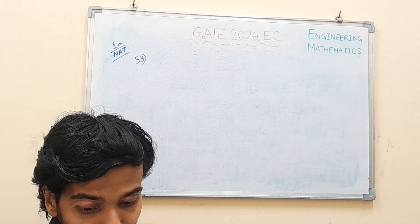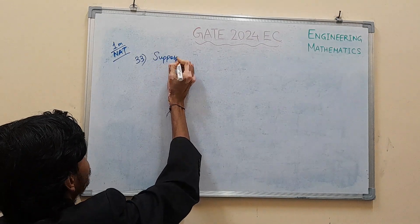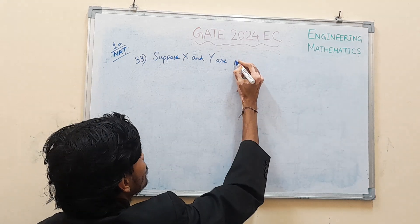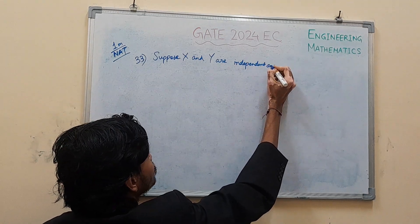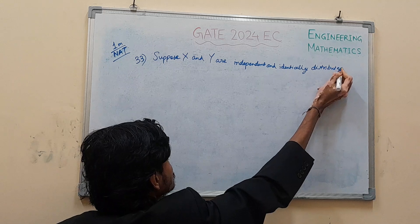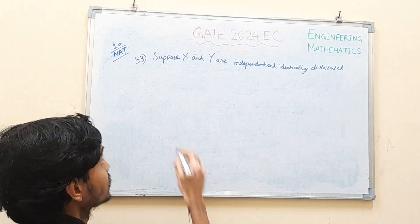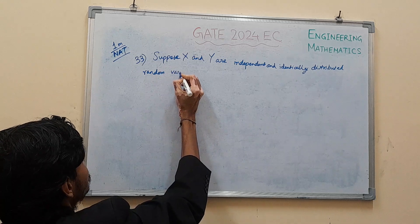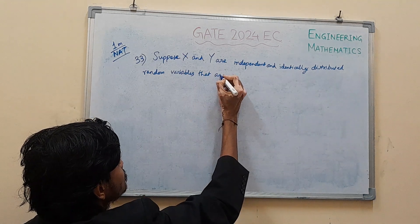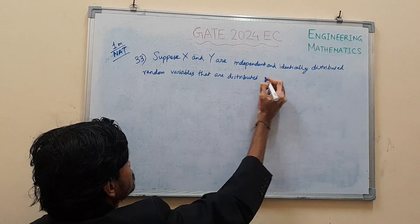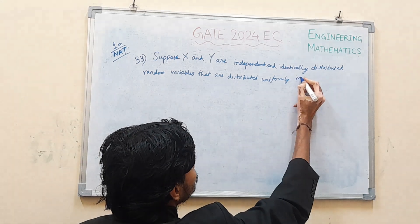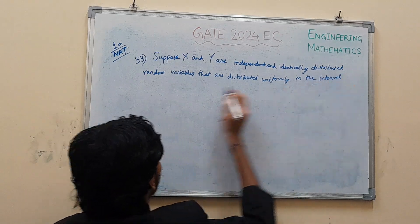One mark, you need to remember the answer to it. Suppose X and Y are independent and identically distributed random variables that are distributed uniformly in the interval 0 to 1.